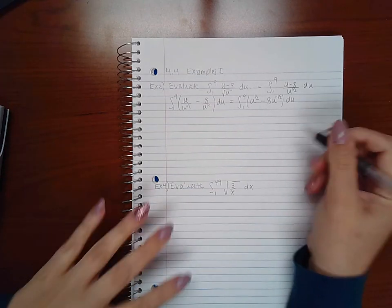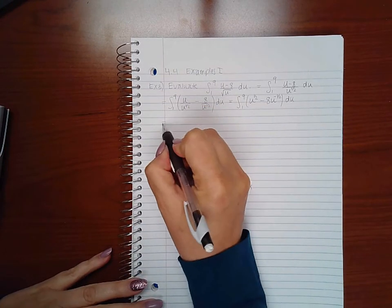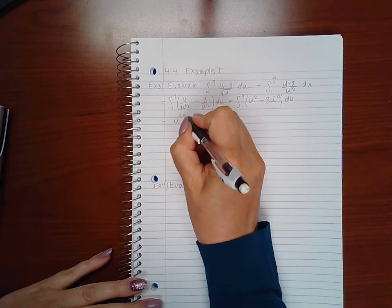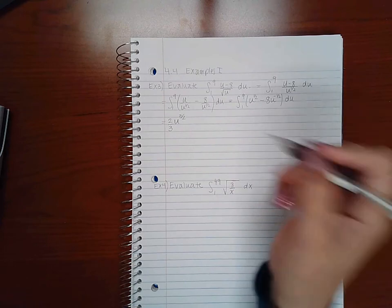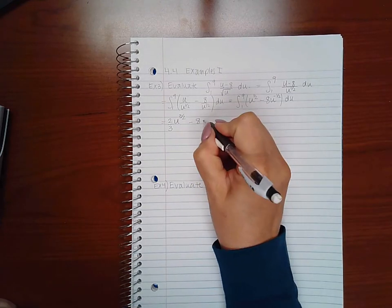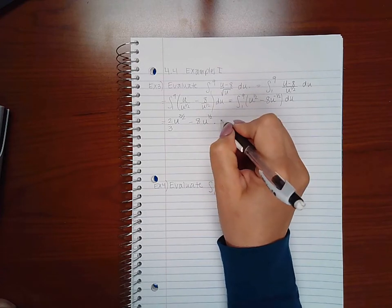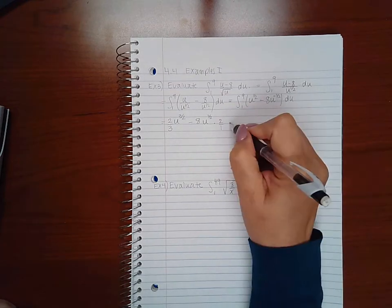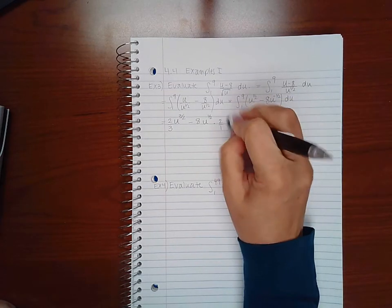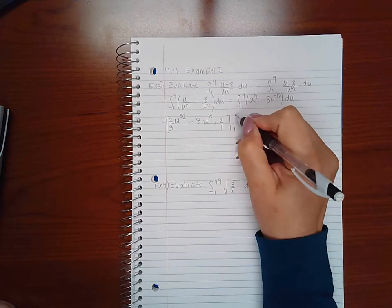Then we have the integration process. So we end up with u to the 3 halves divided by 3 halves, which is the same as multiplying by the reciprocal, minus 8u to the, if I add 1, I get positive 1 half, and then divide by 1 half means I multiply by the reciprocal. And you don't put your plus c. You just evaluate it from 1 to 9.